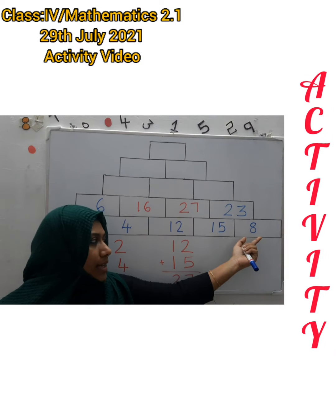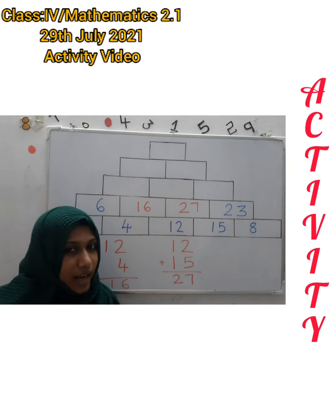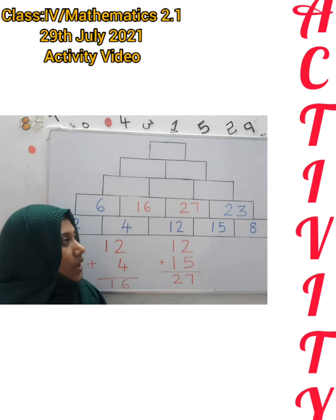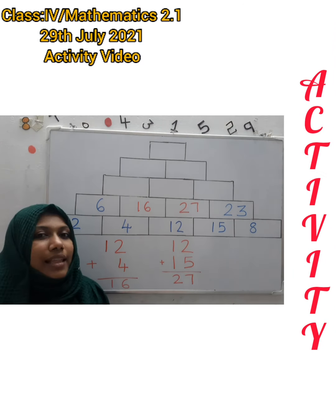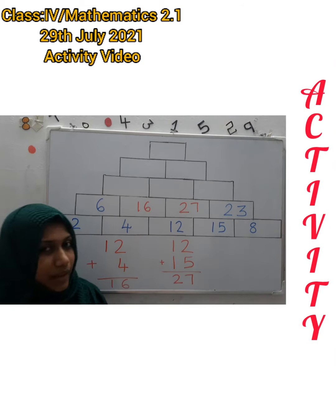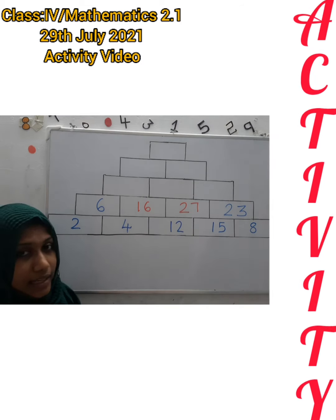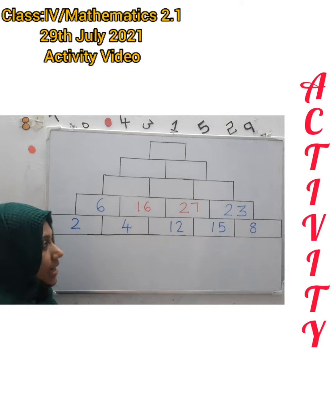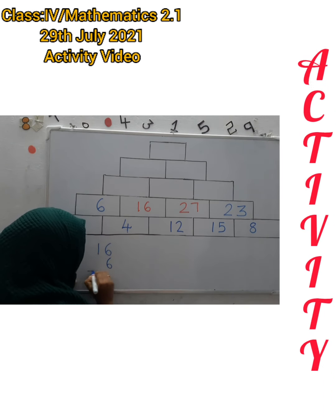15 plus 8 is 23. So the 2nd step is finished. Now we can complete the 3rd step together. First we should add 16 and 6. 16 and 6.